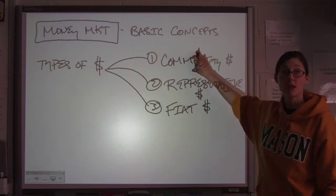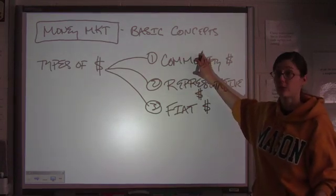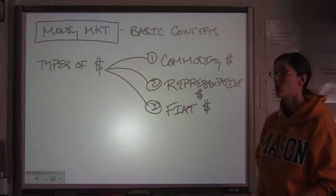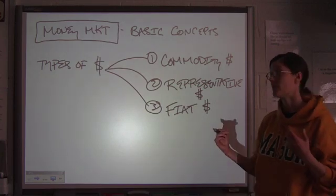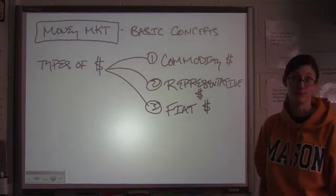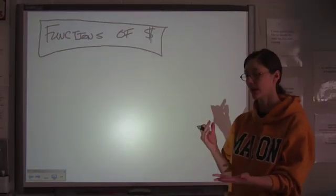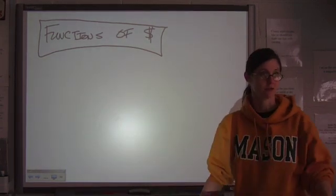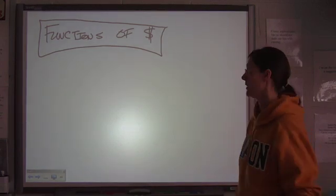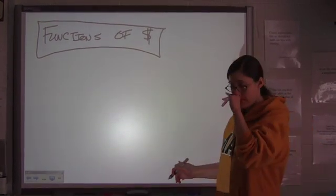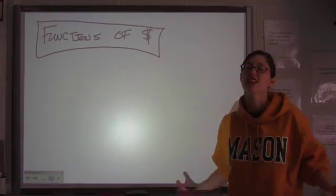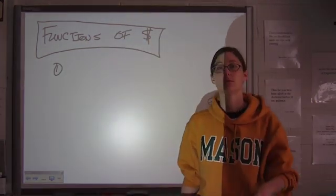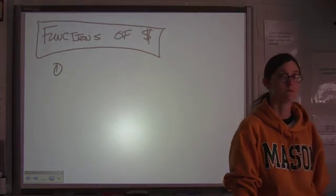So, commodity money means commodities that also function as money, so goods that have some other purpose. Representative means that it represents a quantity of precious metal. And fiat money, which does not represent anything except the promise of the government that the currency has value. All right, so we've got three types of money. Now we've got three functions of money. Lots of things coming in threes in this unit. It's better than having a list of money. You will be visited by three spirits. You can stop now, okay.